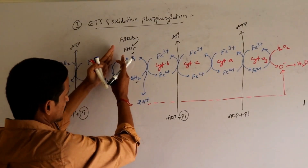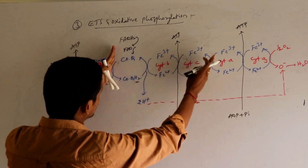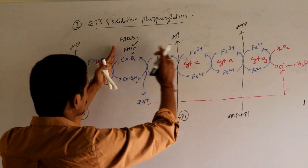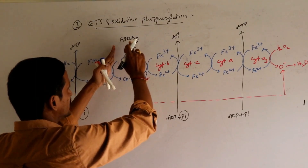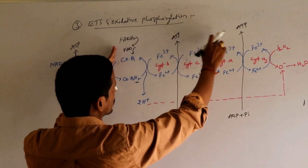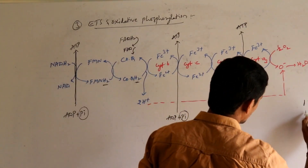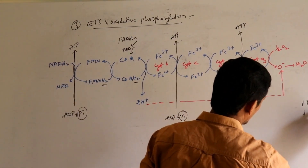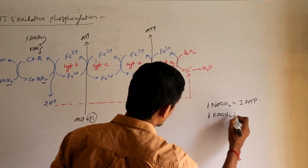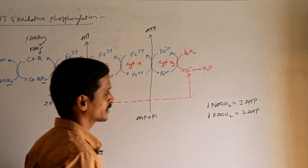FADH2 undergoes further oxidation-reduction steps from here onwards. When FADH2 is oxidized, it leads to the production of 2 ATPs. That means when 1 FADH2 is oxidized, it leads to the production of 2 ATPs.